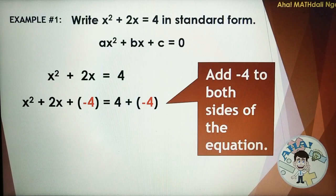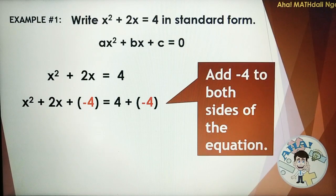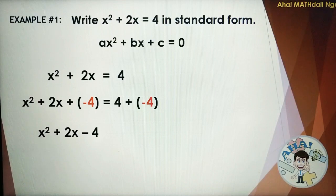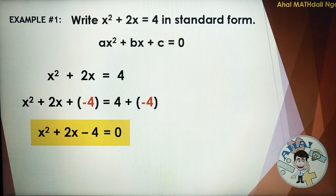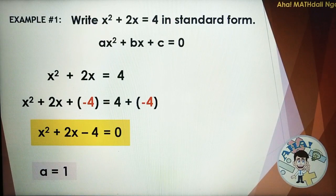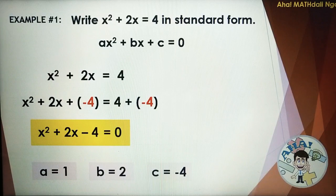Meaning to say, if you change something on the left side of the equation, you must change the same on the right side. Now let's simplify: X squared plus 2X minus 4 is equal to 0. This is now the equation in its standard form. We can now identify the numerical coefficients: A is equal to positive 1, B is equal to positive 2, and C is equal to negative 4.